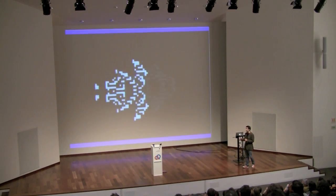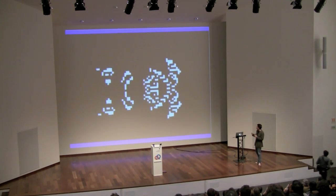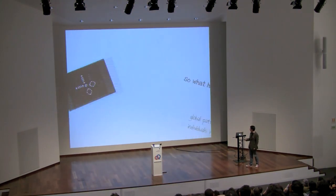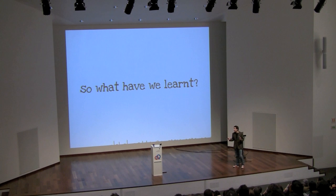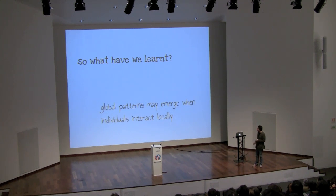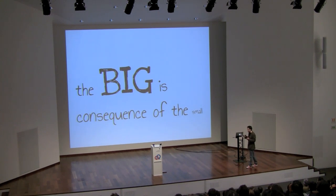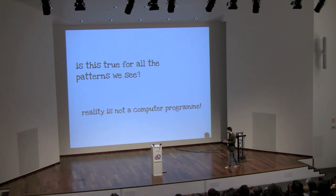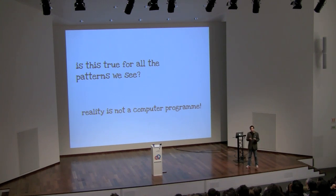So what have we learned so far? Global patterns may emerge when you have a complex network of individuals interacting locally. What we see on the big scale is a consequence of what's happening on the small scale. But is this true only for computers, or also for all the other patterns we see in nature — all the patterns from the first video? Reality is not a computer game, so is there any use in building these models?